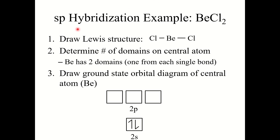Let's start with sp hybridization, looking at beryllium chloride (BeCl₂). The Lewis structure has Cl single-bonded to beryllium on each side — we're focusing on the central atom beryllium, which just has two single bonds, so it has two electron domains. Beryllium is number 4 in the periodic table; its electron configuration is 1s², 2s². Focusing on valence electrons, we have two electrons in 2s and all 2p orbitals are empty.